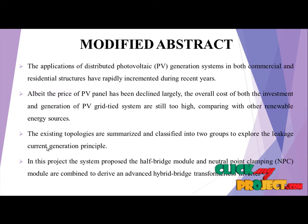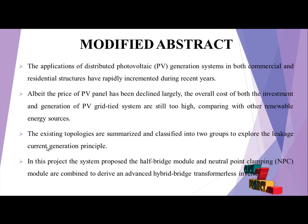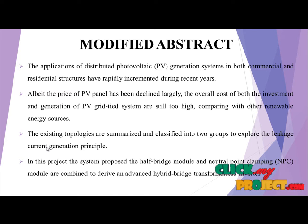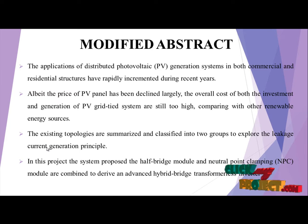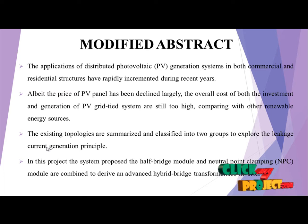Modified abstract: Application of distributed photovoltaic generation systems in both commercial and residential structures have rapidly incremented during recent years. Although the price of PV panels has declined largely, the overall cost of both investment and generation of PV grid-tied systems are still too high comparing with other renewable energy sources. The existing topologies are summarized and classified in two groups to explore the leakage current generation principle.